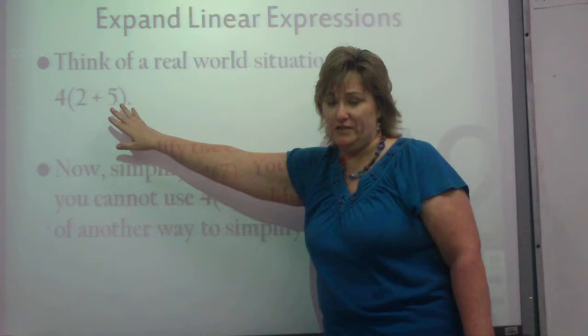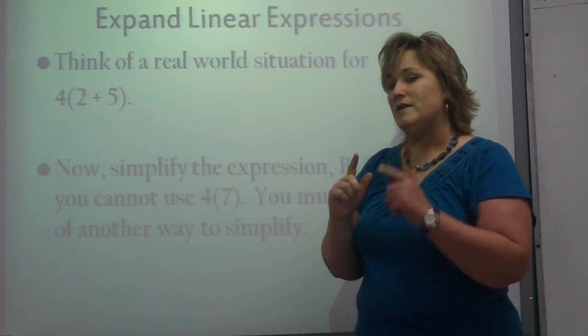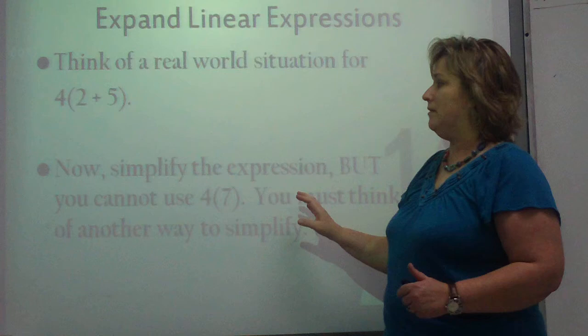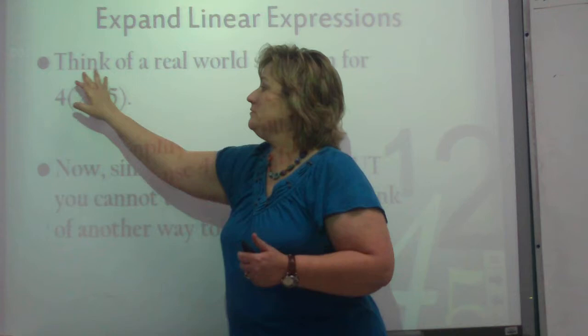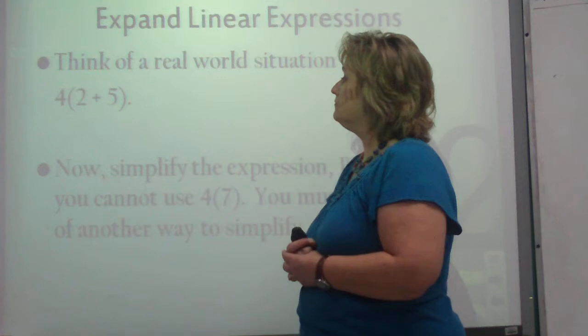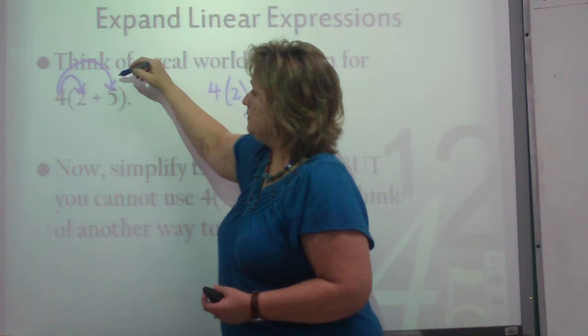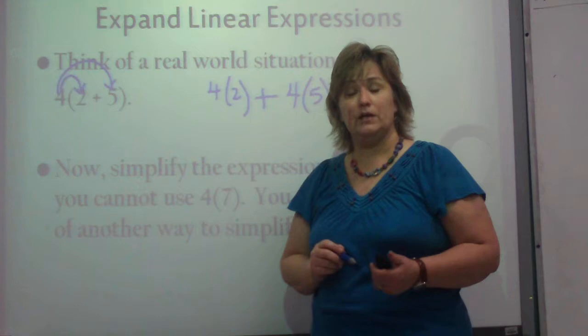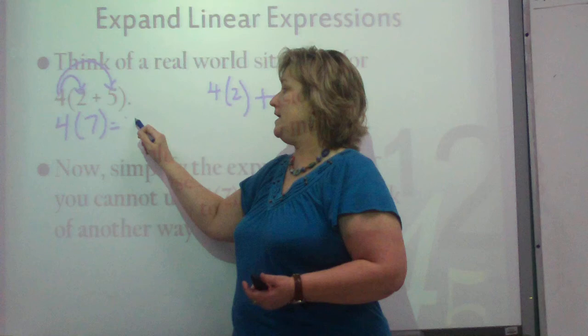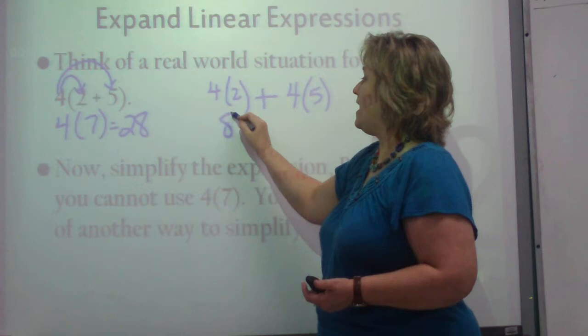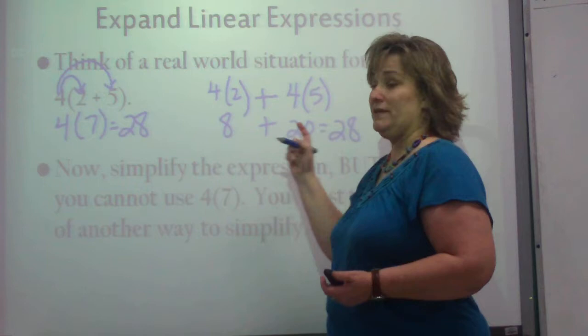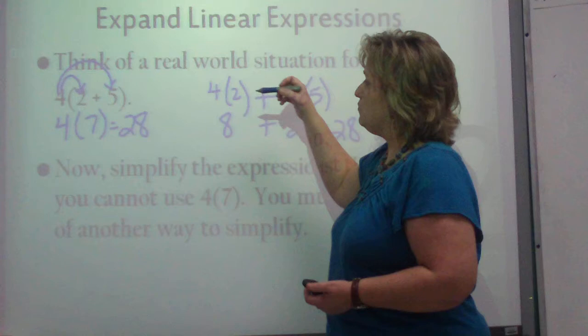But there's a different way to do it, and I want you to kind of think about it. I want you to simplify this expression, but you cannot use 4 times 7. You must think of another way to simplify it. You don't have to write this down in your notes right here, any of this really, because this is mainly just me and you talk, you and I talking. This one right here. Instead of 4 times 7, how else could we write that? Could we write it 4 times 2 plus 4 times 5? Could we write it that way? Well, let's check it and see because you already told me this is 4 times 7, which is 28, correct? Let's see what this is. 4 times 2 is 8, and 8 plus 20 is 28. Did we get the same answer? Absolutely. So that means we could do it either one of these ways.